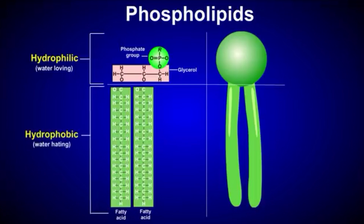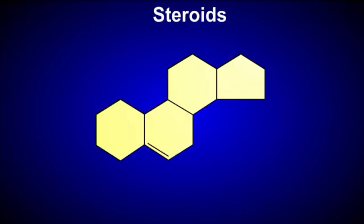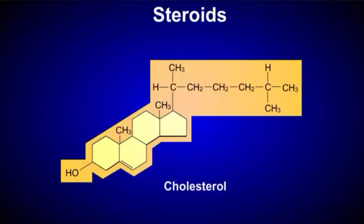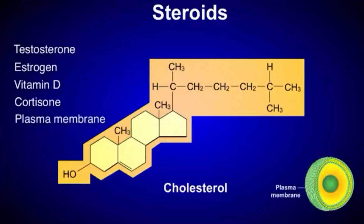Now we are going to steroids. If we look at the structure of steroids, we can see four carbon rings — fused rings — with different functional groups attached, which is why they have many varieties. A very common example is cholesterol. Cholesterol serves as a precursor for different hormones, for example vitamin D, testosterone, estrogens, and cortisol. It is also a component of the plasma membrane.